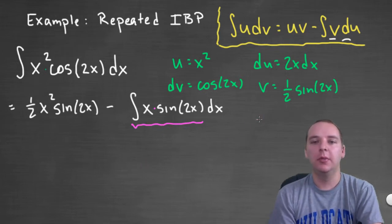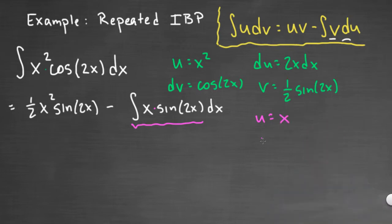I'll change colors to pink here. Here I think a good choice would be to make u equal x and dv equal to sine 2x. The du would be 1 and the v would be negative one half cosine 2x, so kind of running out of space there. So this would be our four terms ready for integration by parts, just on this term, so we're actually going to keep the first term here.